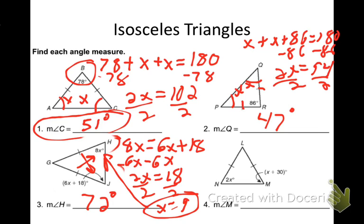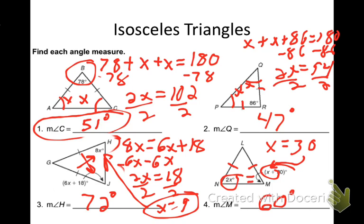Try number 4 on your own — same idea. x equals 30. Plugging that back in, angle M comes out to be 60 degrees. Remember: recognize the isosceles triangle, the two base angles have to be congruent, so set them equal to each other and solve for x.